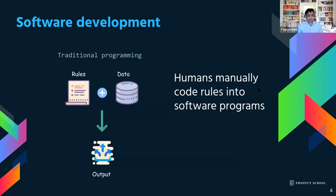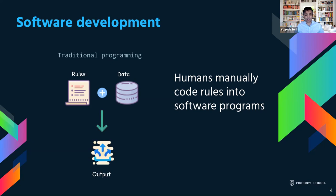In a typical software-based product, at a very high level, how it works is: a software developer figures out how to write rules for performing a particular task, and writes code in a programming language that a computer can understand. Once this program is written, it consumes certain data and produces certain output. So very simply: program plus data gives output.